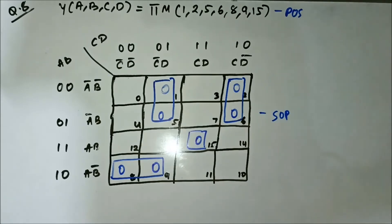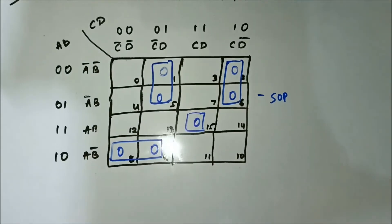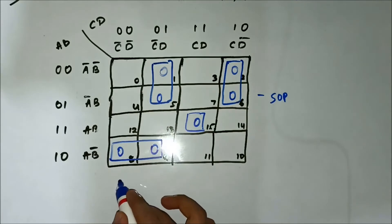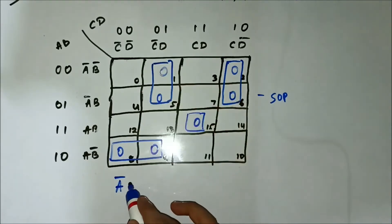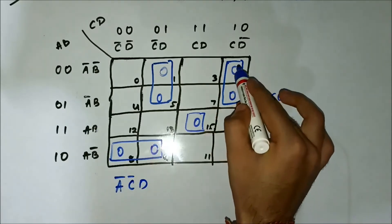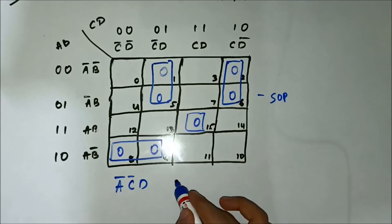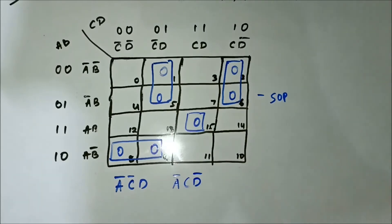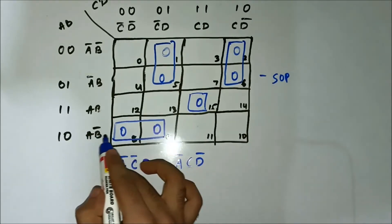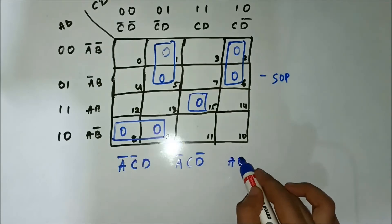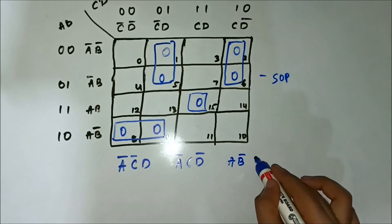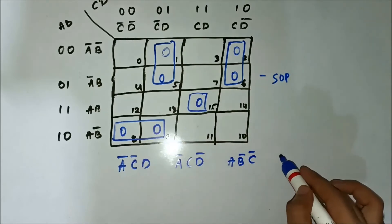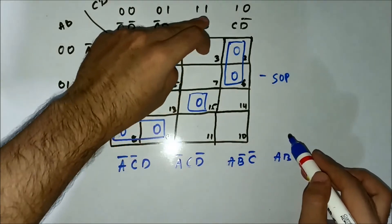Now we have to identify the common variables. For the first pair, in the horizontal side A-bar is common, and in the vertical side C-bar is common. For the second pair, in the horizontal side A-bar is common, and in the vertical side C-bar is common. For the third pair, in the horizontal side AB-bar is common, and in the vertical side C-bar is common. And for the single-cell group, it is AB and CD.